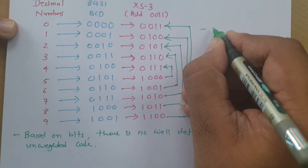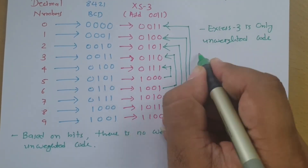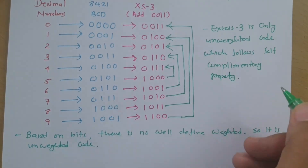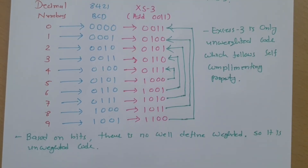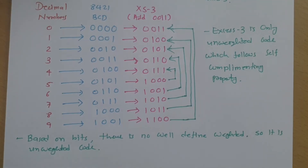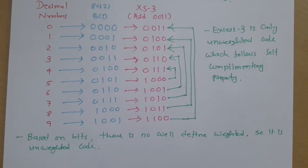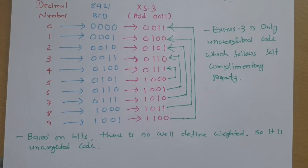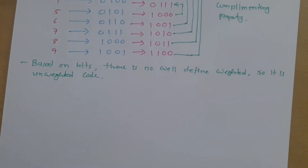So Excess-3 is the only unweighted code that follows the self-complementary property. Now let us look at some examples to understand how we can convert any decimal number into Excess-3 code.